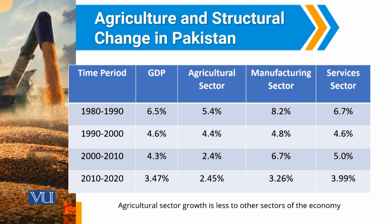If we talk about growth in different sectors, we can observe that there is a consistent decline in the GDP growth rate over the last four decades. And in all this time frame, we can observe that agricultural sector growth is always less than the growth of the other two sectors — the manufacturing sector and services sector.